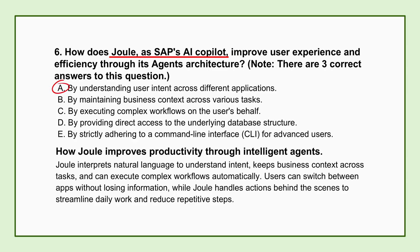The second function is maintaining business context across various tasks, which is really critical for flow. If a procurement manager starts by asking Joule to find suppliers for a specific part number in one system, and then immediately asks for a historical risk analysis of those same suppliers stored in a completely different financial system, Joule automatically carries that vendor ID and part number context across. It remembers the relevant process data from the previous step, eliminating so much repetitive data entry.